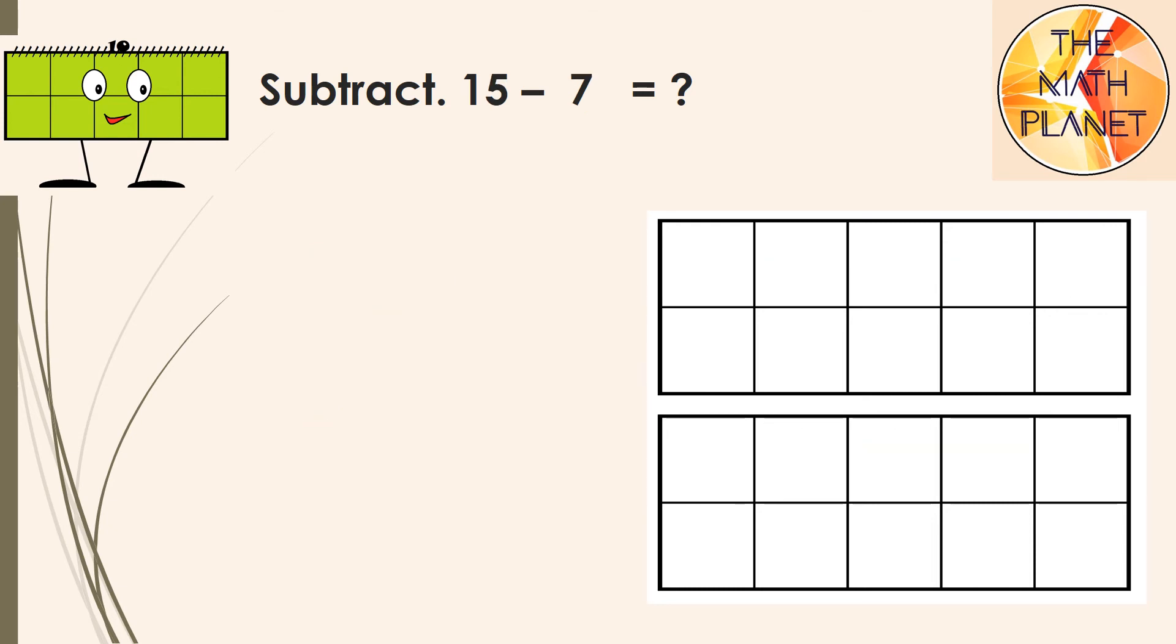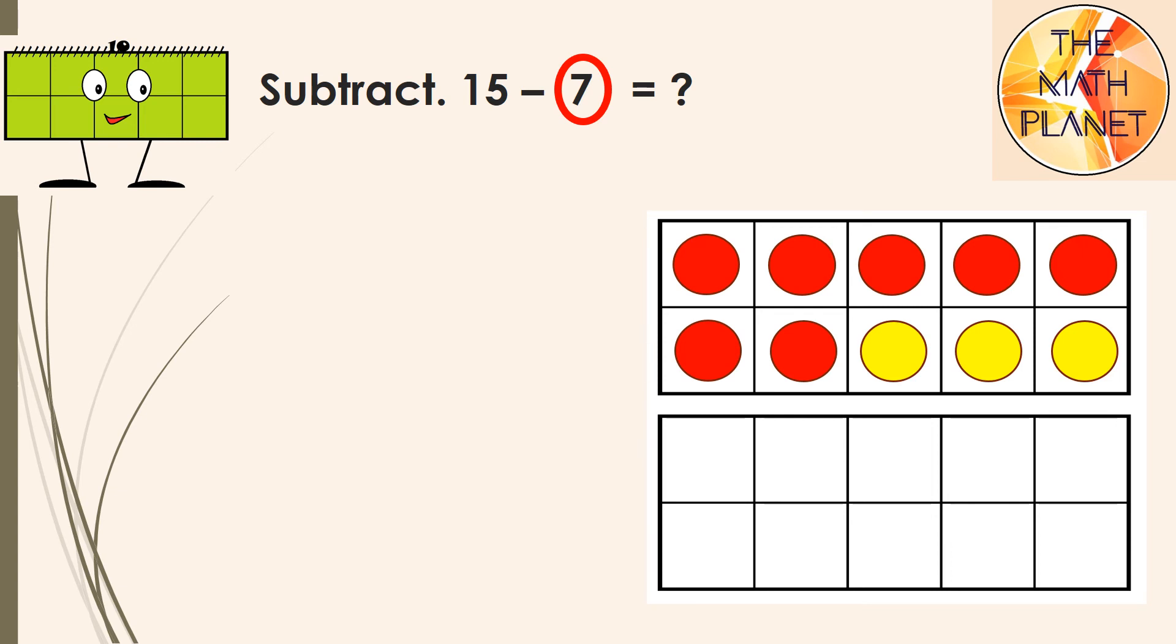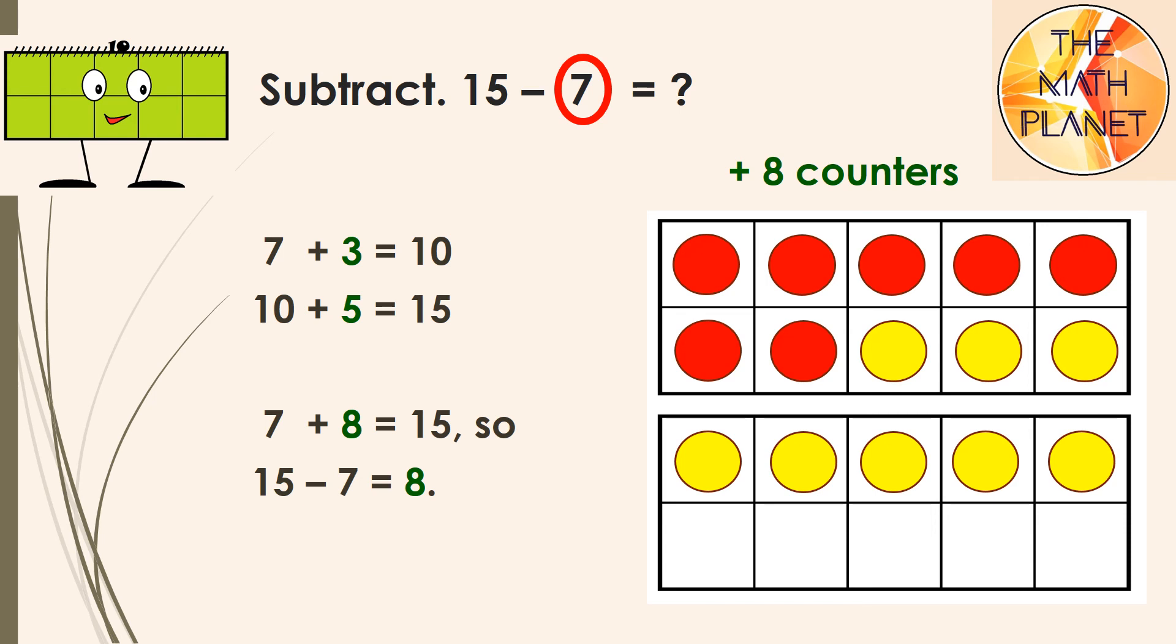Now, can you help me to solve this example to find 15 minus 7? First, I will draw 7 counters on 10 frames. Next, I will add 3 to make 10, so 7 plus 3 equals 10. Then, I will add 5 more to reach 15, so 10 plus 5 equals 15. I added 3 and 5 more counters, which means I added 8 counters. So, 7 plus 8 equals 15, which means that 15 minus 7 equals 8.